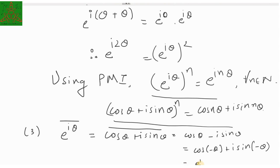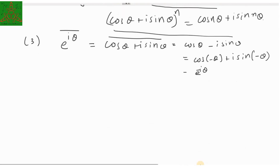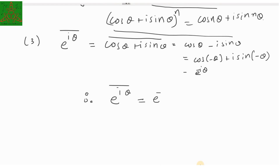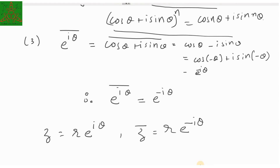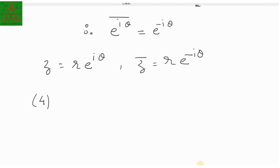Third remark: the conjugate of e raised to iθ. We have (cos θ + i sine θ) conjugate equals cos θ minus i sine θ, and this equals cos(−θ) plus i sine(−θ), because cos(−θ) equals cos θ since cosine is an even function, and sine(−θ) equals minus sine θ since sine is an odd function. So this can be written as e raised to minus iθ. Therefore, the conjugate of e raised to iθ is e raised to minus iθ. If z equals r·e raised to iθ, then z̄ equals r·e raised to minus iθ.